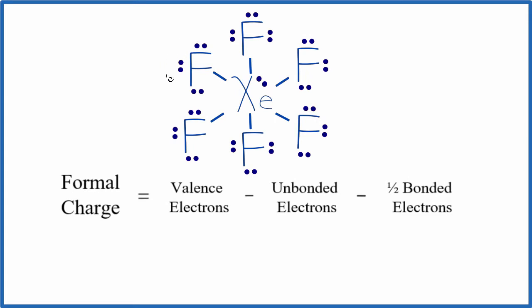So this Lewis structure, we have all the fluorines with octets, and then the xenon in the center has 2, 4, 6, 8, 10, 12, 14 valence electrons around it.